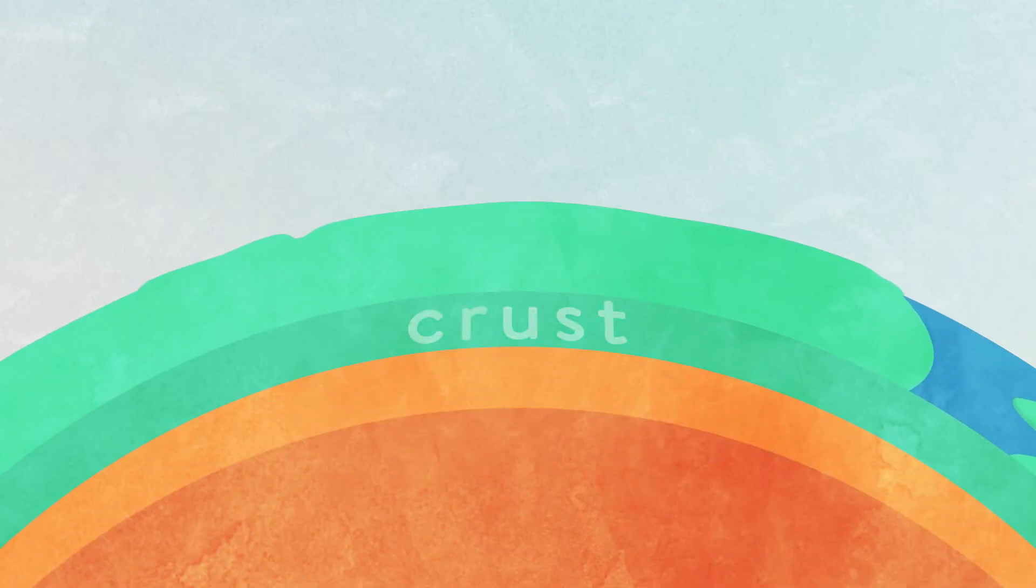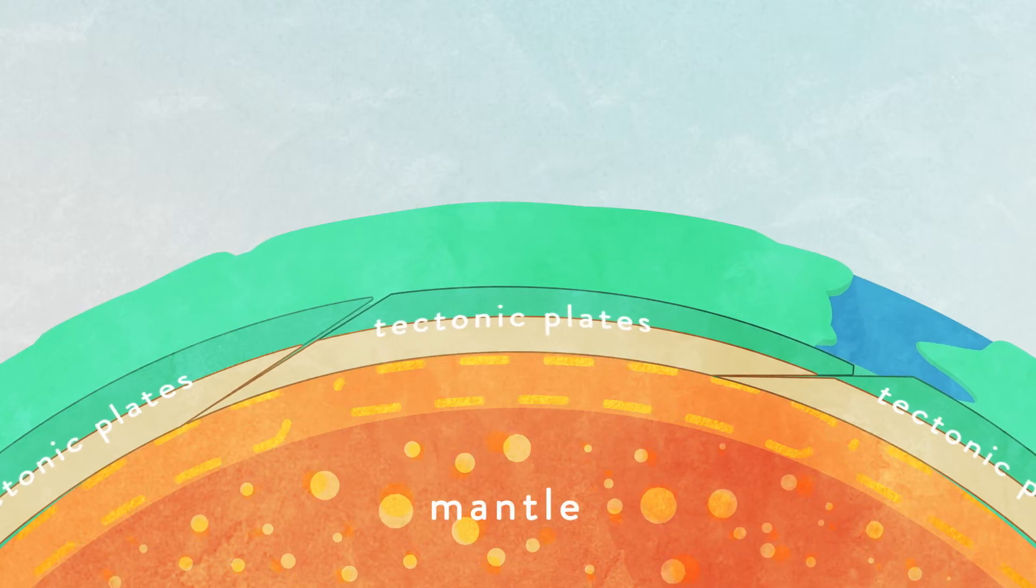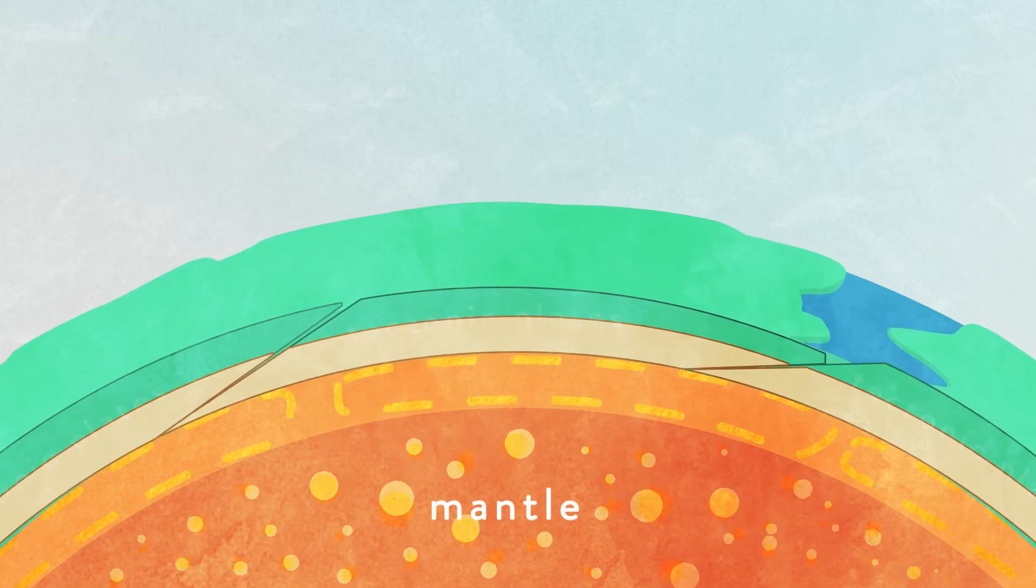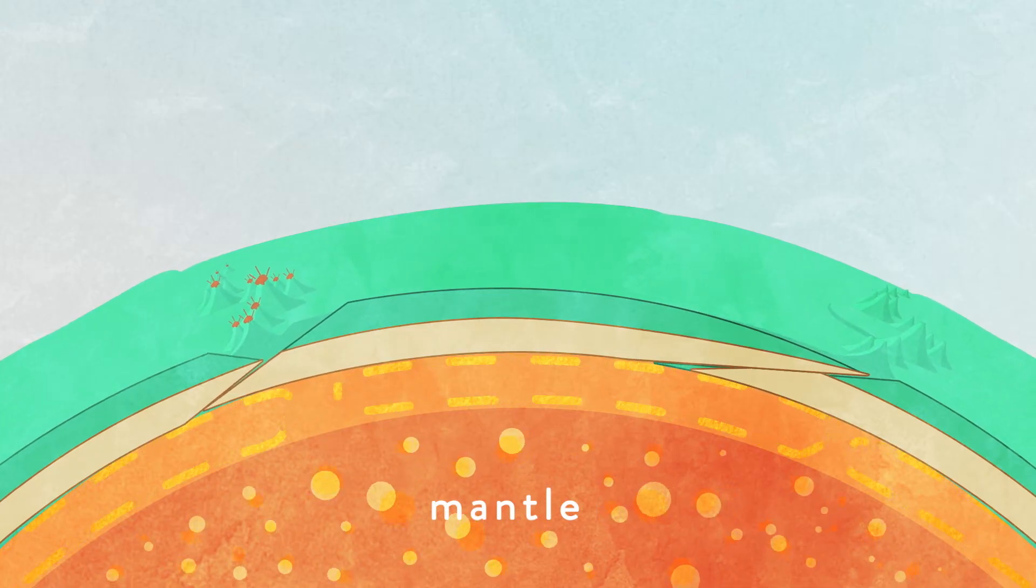Continents migrate over enormously long periods of time because the Earth's outer shell, or crust, is broken up into tectonic plates, which ride on top of the Earth's magma layer, or mantle, which is also moving. These plates pull away and collide with each other to form landforms like mountains and volcanoes.